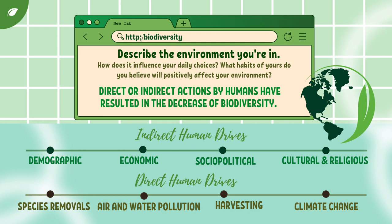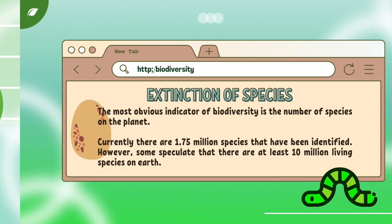The Convention on Biological Diversity states that there are both indirect and direct human drivers. Some of the indirect human drivers are demographic, economic, socio-political, scientific and technological, and cultural and religious factors. Some of the direct human drivers are changes in local land use and land cover, species introductions or removals, external inputs, harvesting, air and water pollution, and climate change.